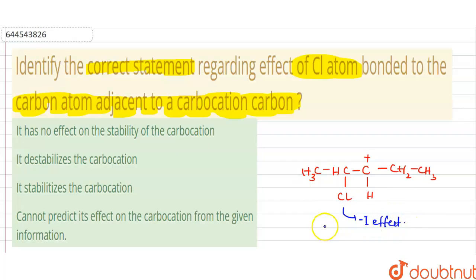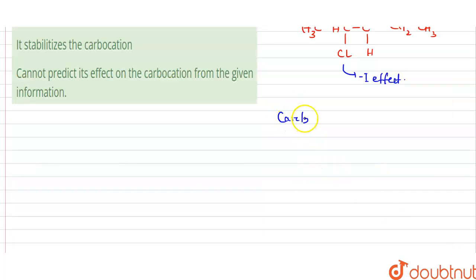If it shows minus I effect, then we know that for a carbocation, it is always destabilized by a minus I group. The minus I group destabilizes it.